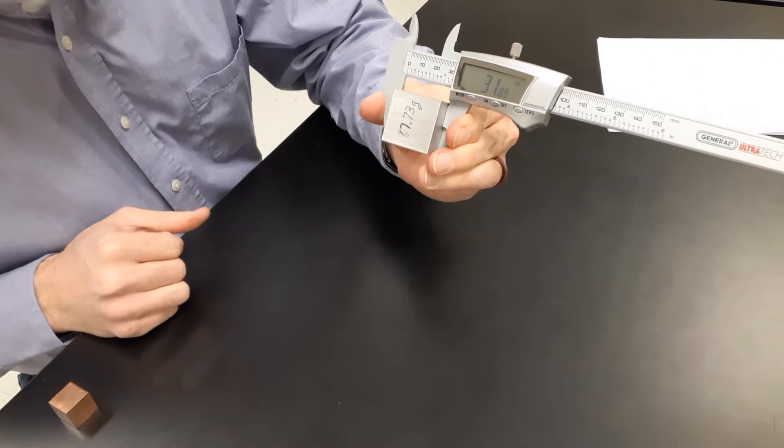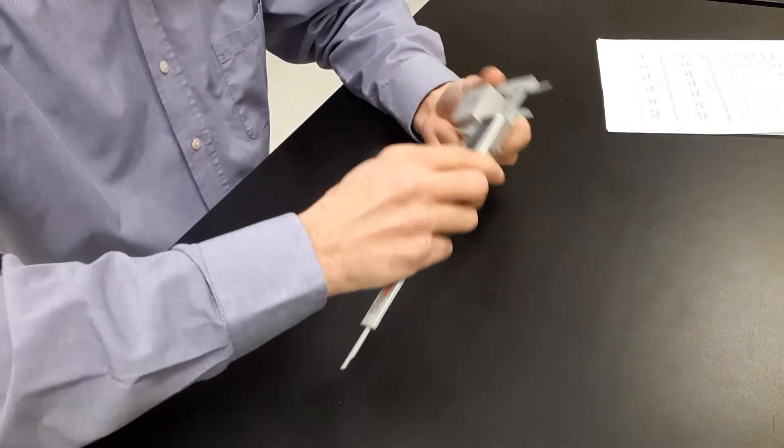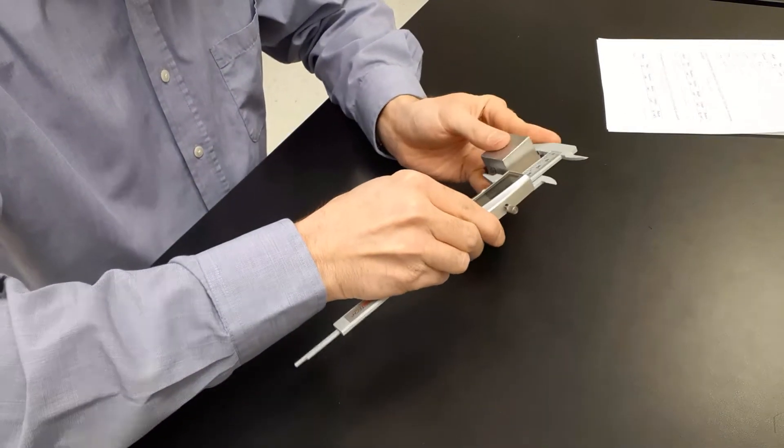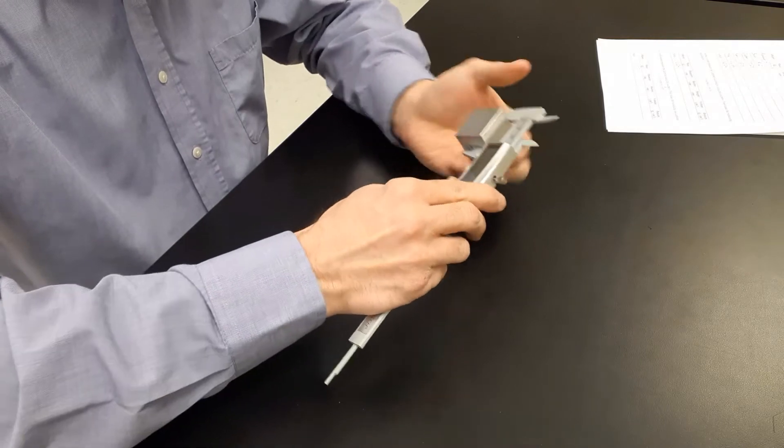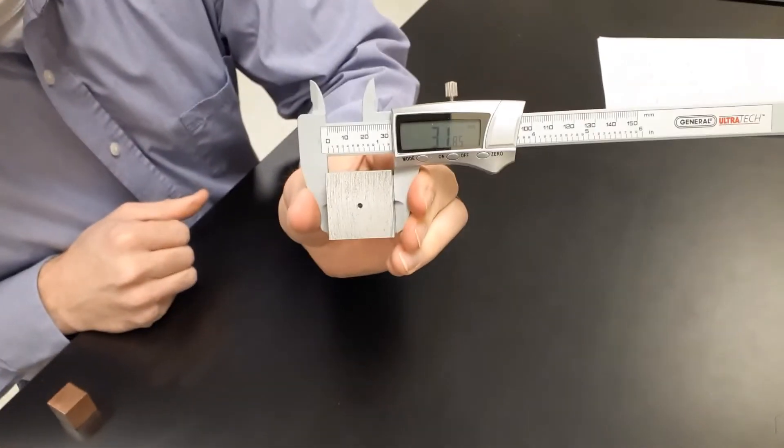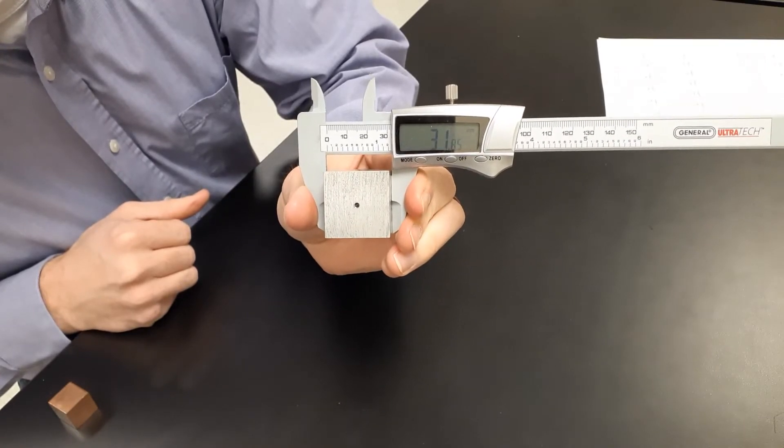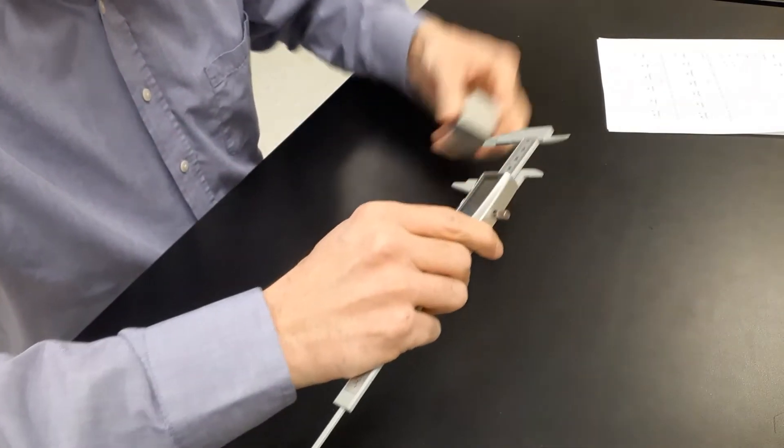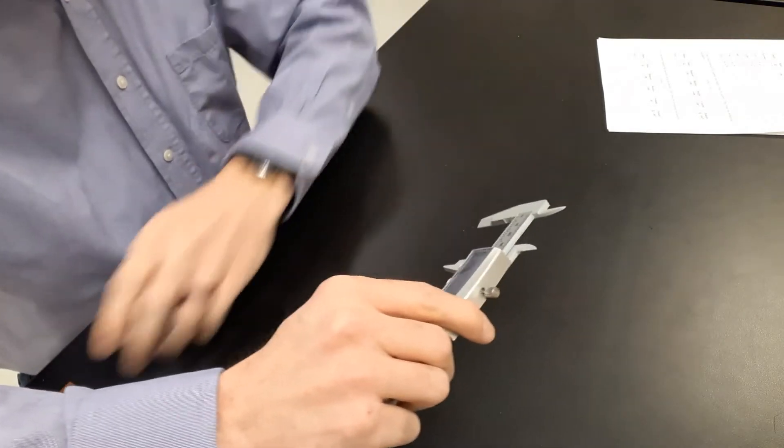And then one more measurement to give us height 31.85 millimeters. So that will take care of our aluminum block.